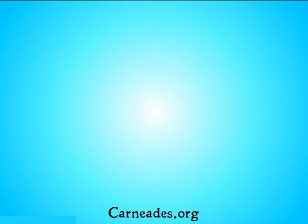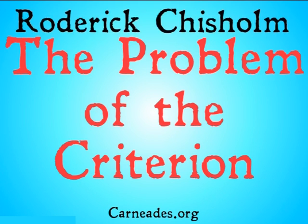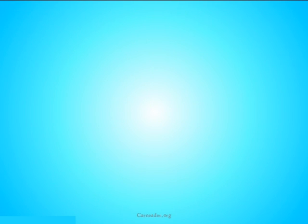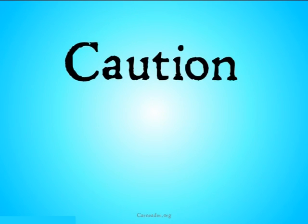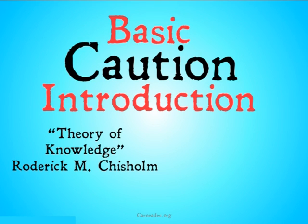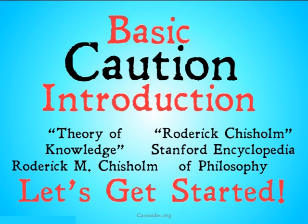Welcome back to Carneades.org. Today we're going to be looking at something called the problem of the criterion. This is a problem posed by Roderick Chisholm, and it's a problem for the very foundations of knowledge. A quick caution before we get going: this is a basic introduction to the problem of the criterion. If you want more information, you should check out Theory of Knowledge by Roderick M. Chisholm, or the entry on Roderick Chisholm in the Stanford Encyclopedia of Philosophy.